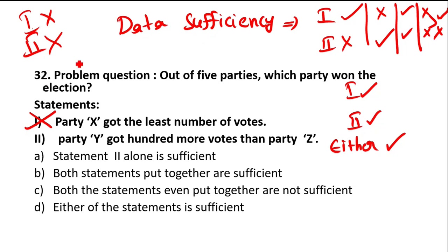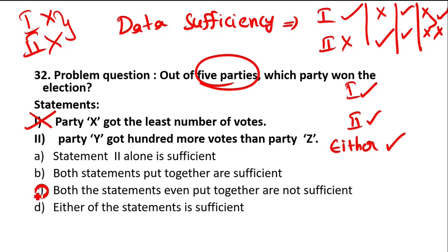You can't answer with statement two either. Now combine both and try to answer. Even though you combine both — X, Y, Z — you can tell who is first, second, third among them, but they are talking about five parties. Simply, you can't answer the question even with both statements together. Both statements even put together are not sufficient to answer the question. So the answer is Option C.